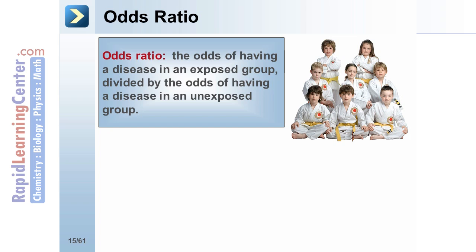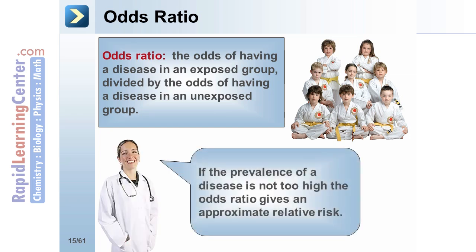For case control studies, the odds ratio is defined as the odds of having a disease in an exposed group divided by the odds of having a disease in an unexposed group. If the prevalence of a disease is not too high, the odds ratio gives an approximate relative risk.